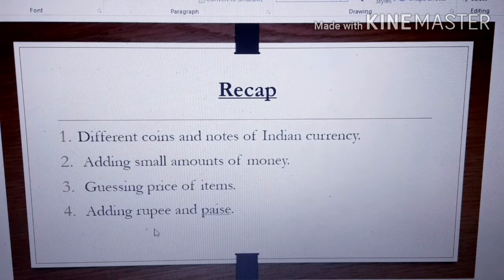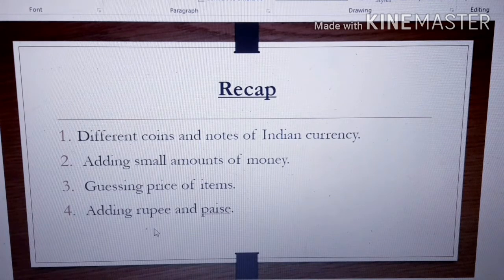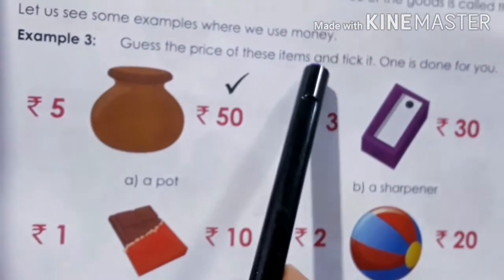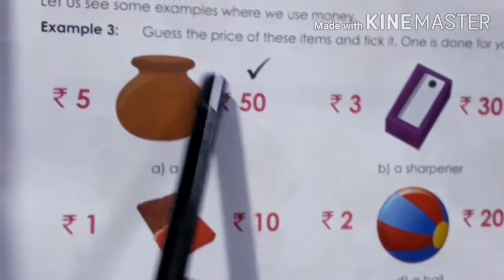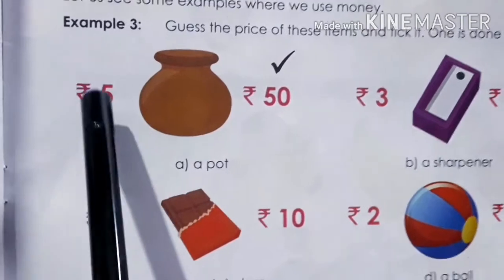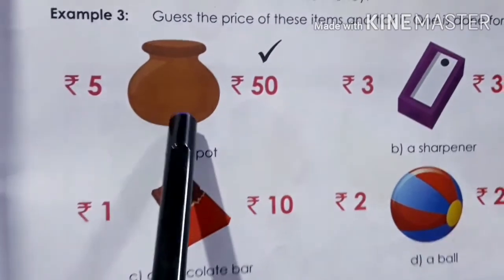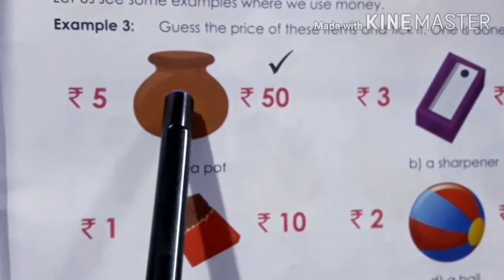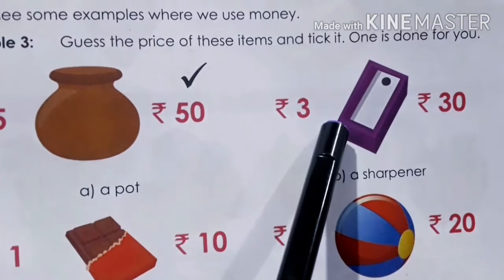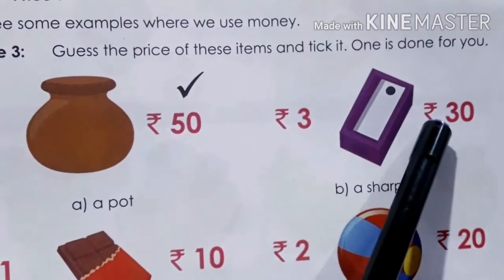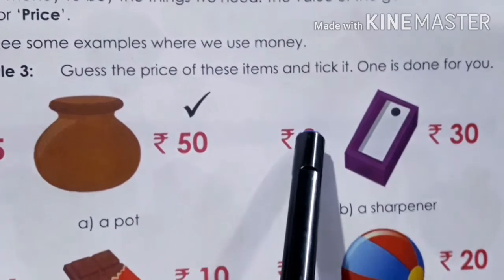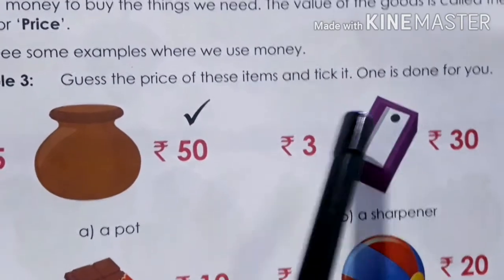Next is guessing the price of items. Take out page number 29 of your book. Guess the price of these items. One is done for you — this is a pot, and it is big in size. What can be the price: Rupees 5 or Rupees 50? We assume based on size, so this pot can be Rupees 50. Next, this is a sharpener. Rupees 30 is too much — the cost of this sharpener can be Rupees 3.